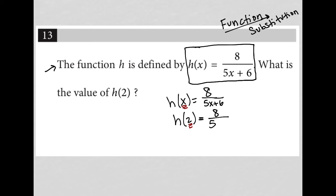So instead of 5x, it becomes 5 times 2. So we have 5 times 2 plus 6 as our denominator.